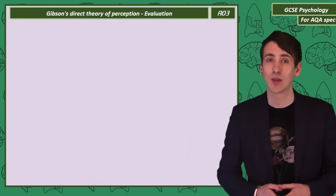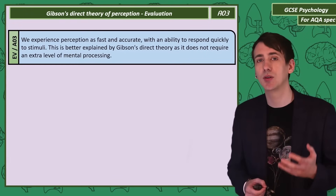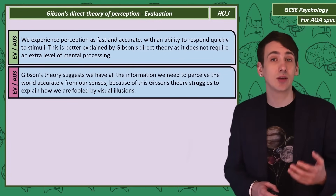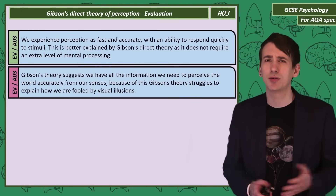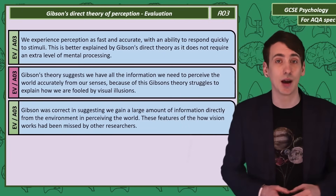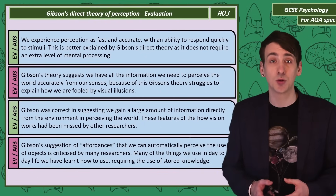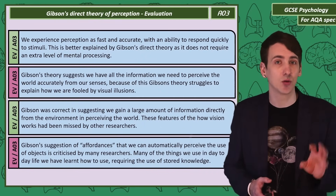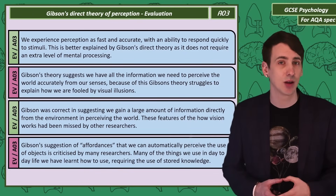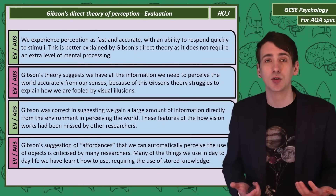Let's look at evaluations of Gibson. The speed of perception — being able to respond quickly and precisely to visual stimuli — is better explained by Gibson's direct theory, as Gregory's theory requires an additional level of mental processing. Gibson's theory suggests we gain all the information we need from our eyes, but this struggles to explain how we're fooled by visual illusions. However, Gibson is correct that there's a significant amount of information directly perceived by the eyes. Gibson used the term affordances to explain how we automatically perceive the usefulness of objects from sensory information. But researchers reject affordances because many things we use in everyday life are learned, and that knowledge is stored.